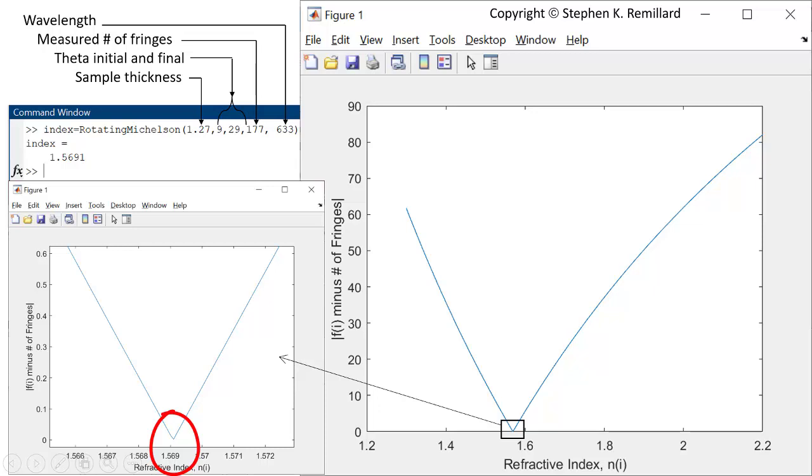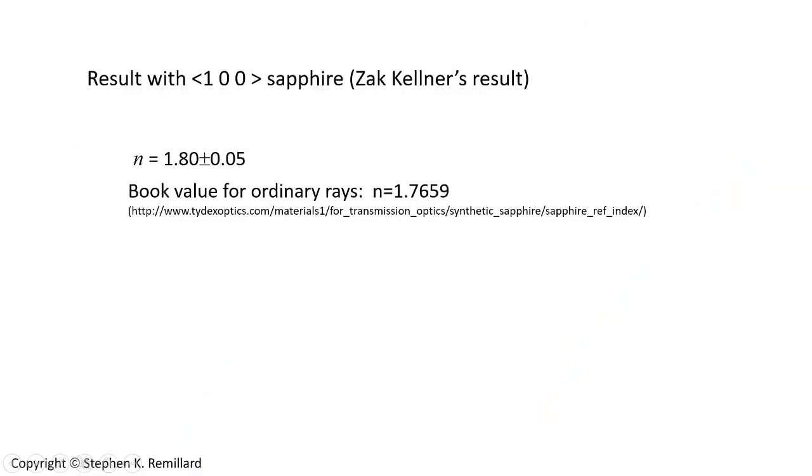It's worth benchmarking all of this as well. My student from a few years ago, Zach Kellner, did this experiment first and actually developed this method of using the rotating sample on the Michelson interferometer for us to use in the future. And he tested it with sapphire. The book value index for sapphire is 1.7659 for ordinary rays and it's 1.00 oriented with a polarized laser beam. So that's what I will expect. Zach concluded that the index of refraction from his measurement was 1.80 plus or minus 0.05.